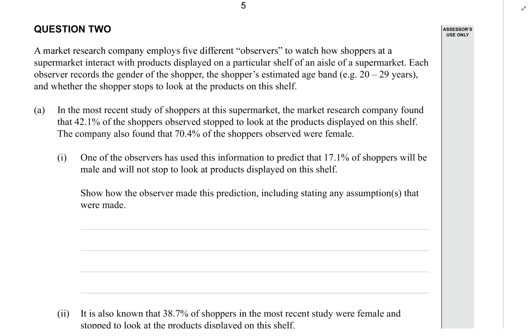A market research company employs five different observers to show how shoppers at a supermarket interact with products displayed on a particular shelf of an aisle of a supermarket. Each observer records the gender of the shopper, the shopper's estimated age band, and whether the shopper stops to look at the products on the shelf.